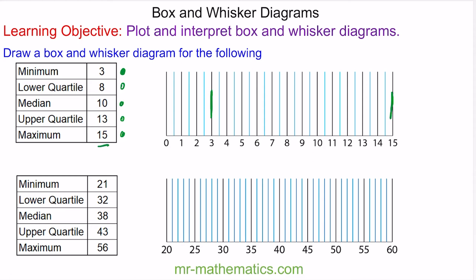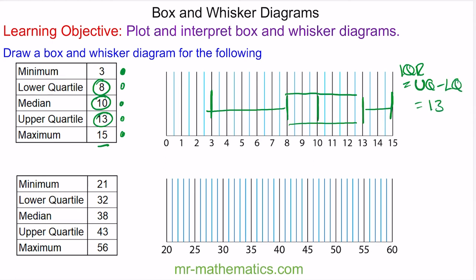The lower quartile is at 8, which we can show here. And the upper quartile is at 13, so now we can create our box and our whiskers. The median is at 10. This is our box plot, and it has an interquartile range of the upper quartile minus the lower quartile, which is 13 take away 8, which is 5.